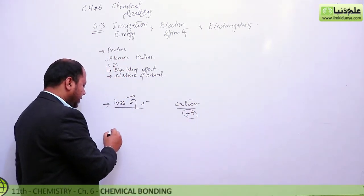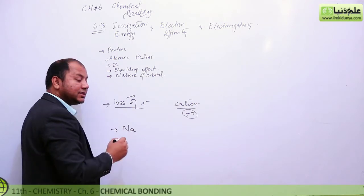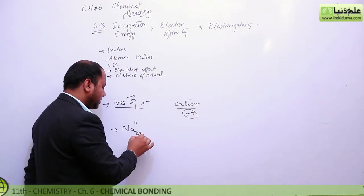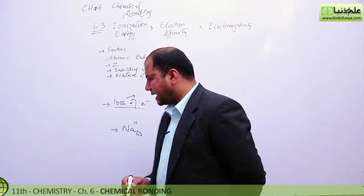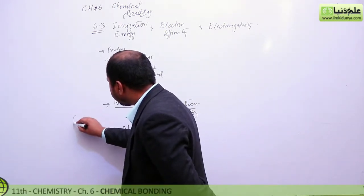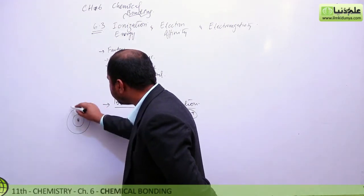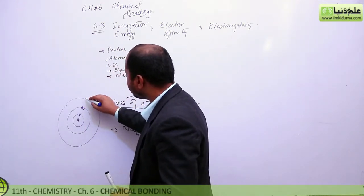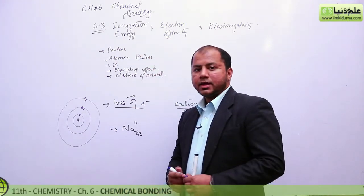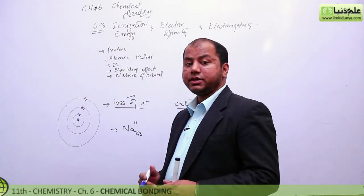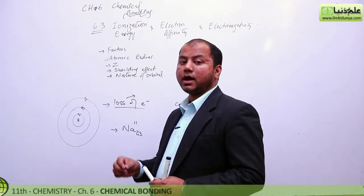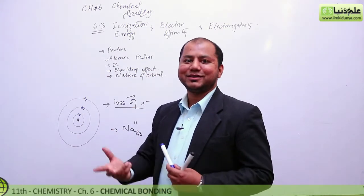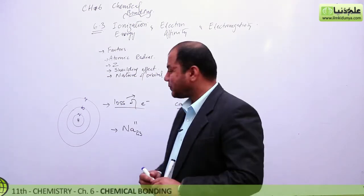Let's take sodium — it's the 11th element of the periodic table. It has 11 protons, 11 electrons, and a mass of 23. This atom contains three shells: the first shell has 2 electrons, the second has 8 electrons, and the third (outermost) has 1 electron. Ionization energy is defined as the amount of energy required to take out an electron from the outermost shell of an isolated gaseous atom.